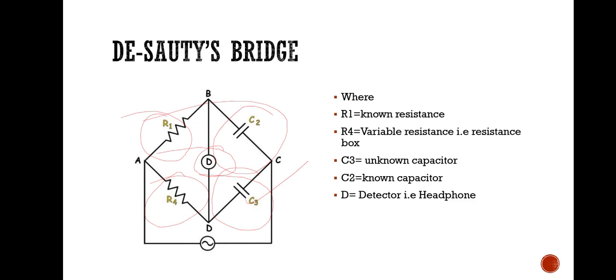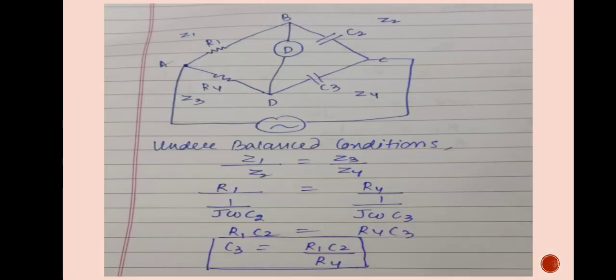Now, we have a De-Sauty bridge. In this De-Sauty bridge, first of all, we have R1. R1 is a known resistance. C2 is unknown capacitor. C3 is the unknown capacitor whose value we will determine. And R4 is the variable resistance or resistor box. And D is our detector. Here, as you can see.